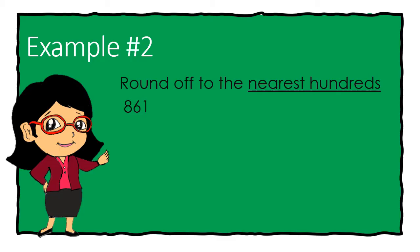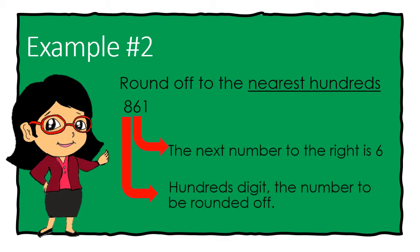Let's try another example. Round off to the nearest hundreds, 861. 8 is on hundreds place. This is the number to be rounded off. Next number to its right is number 6.